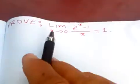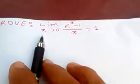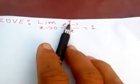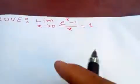Hello friends, then I'm going to prove limit x tends to 0 of (e^x - 1)/x is equal to 1.